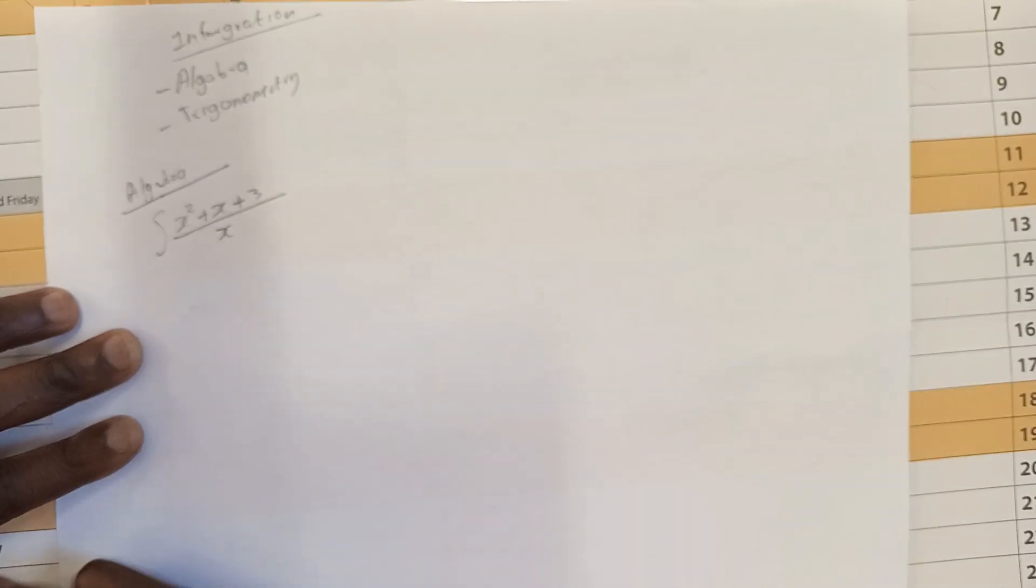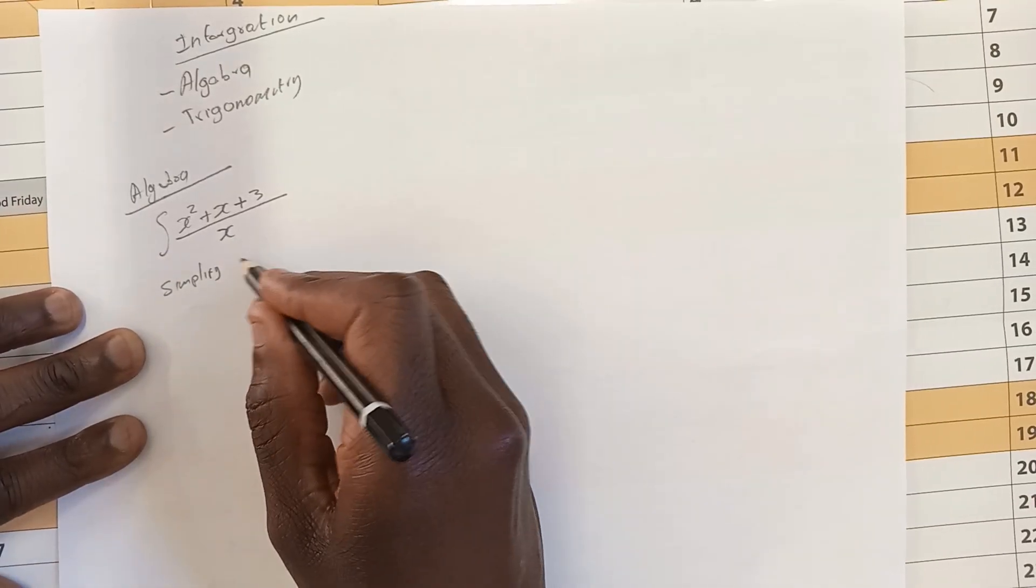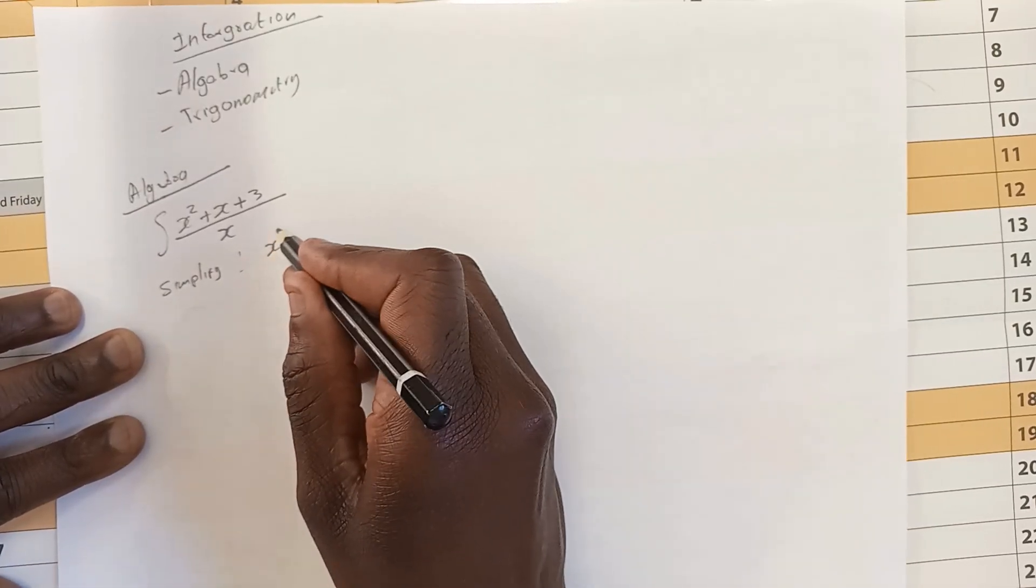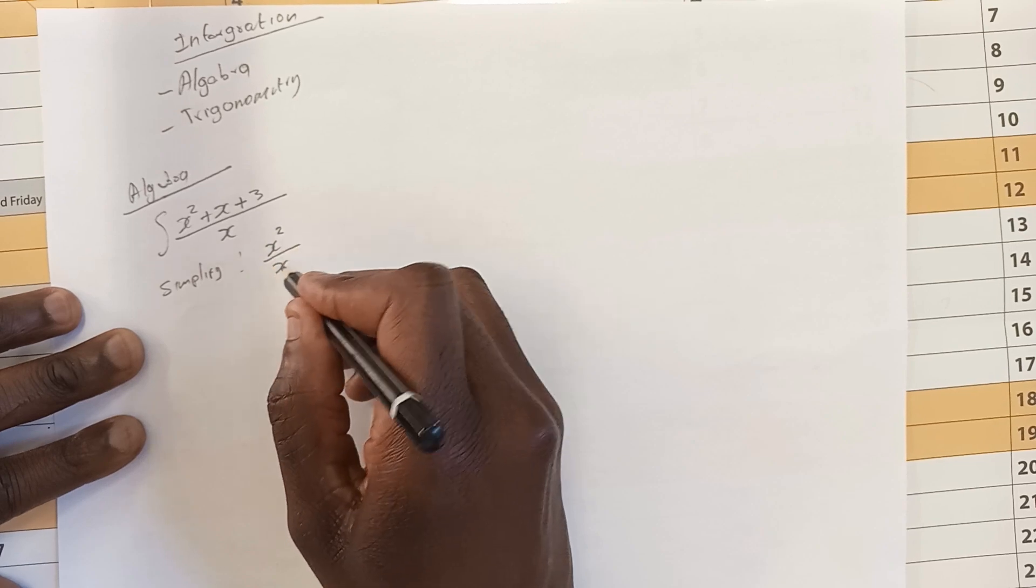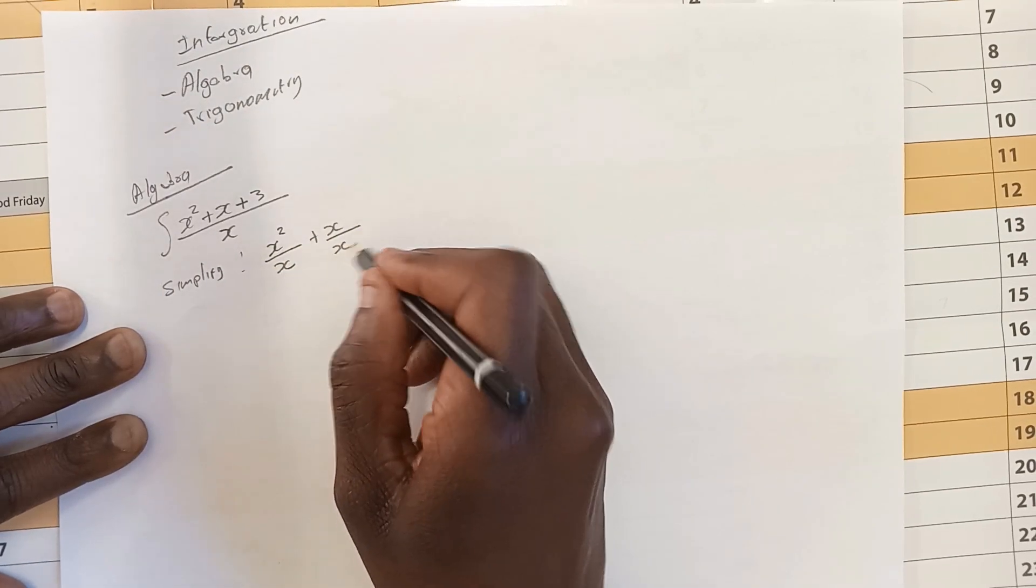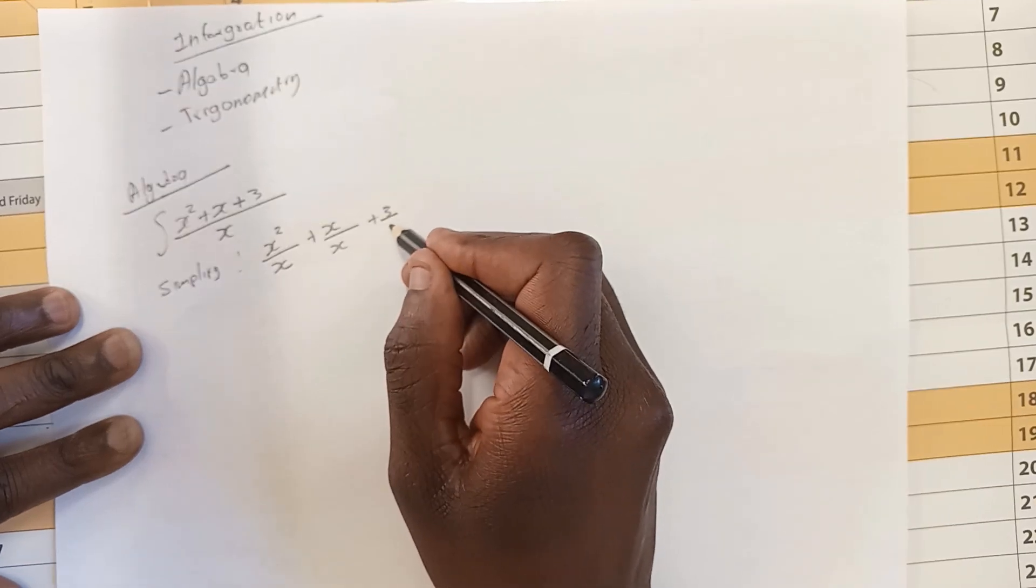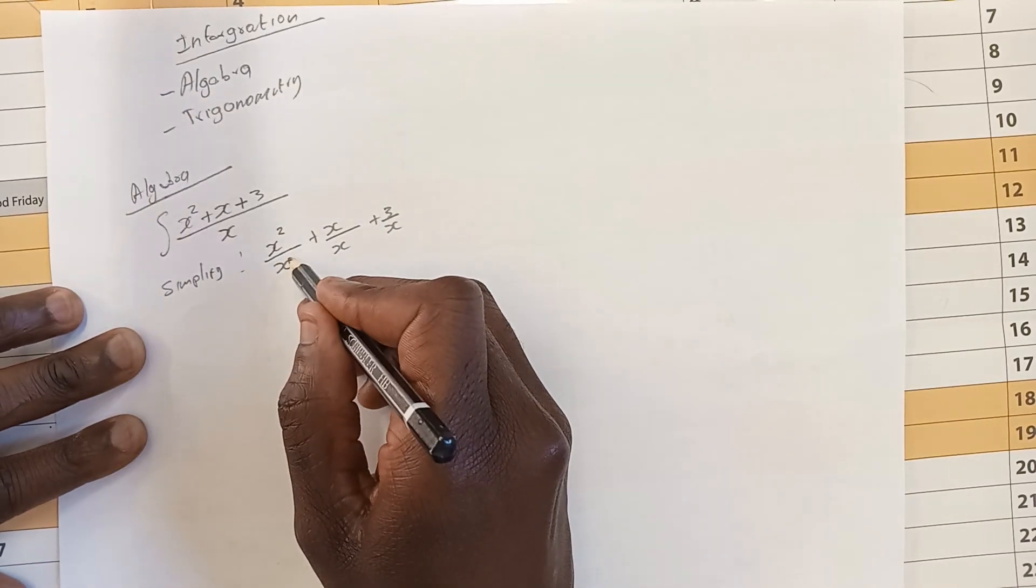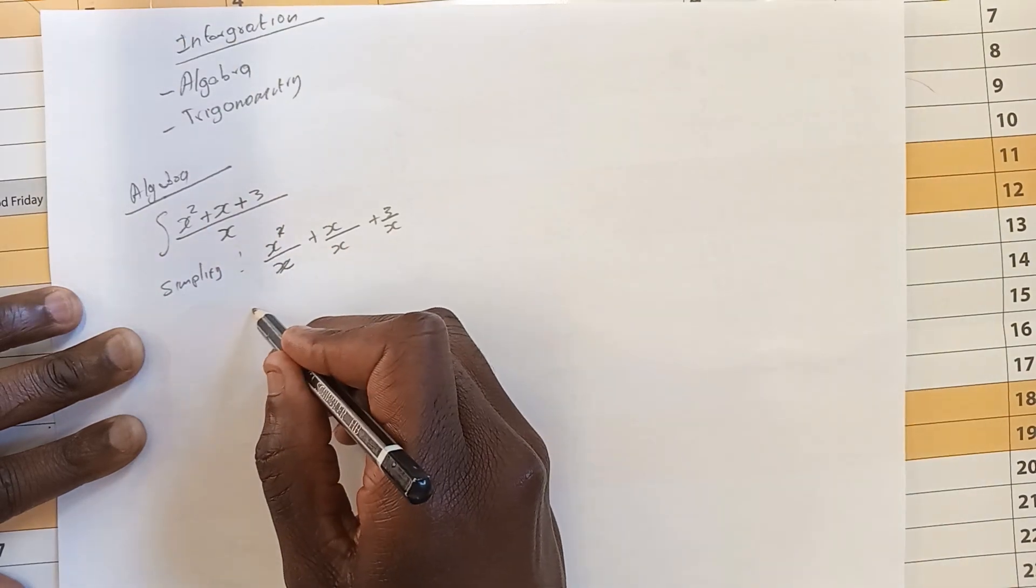So here what you must do you must simplify. How do we simplify? We say is x squared divided by x for each and every term plus x divided by x plus 3 divided by x. So x is going to cancel out x. We are left with x plus 1 plus 3 times x minus 1.